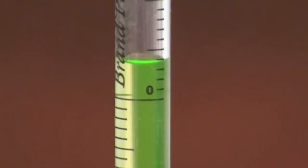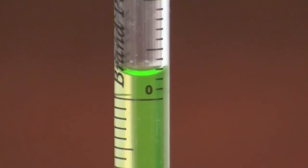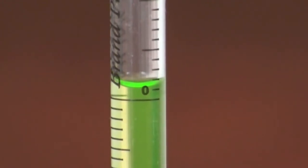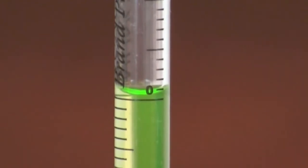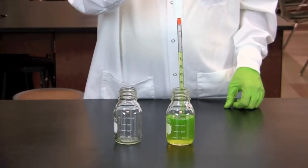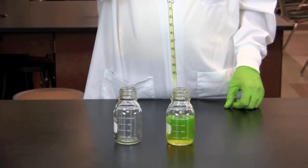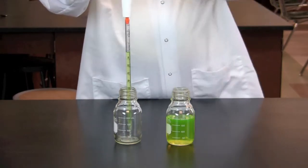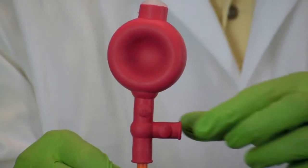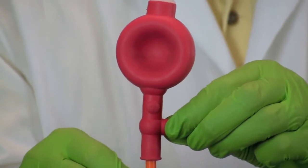Then gently squeeze on the E or exhaust valve until the bottom of the meniscus touches the desired graduated line. Move to the target container you wish to transfer the sample into. Squeeze the E or exhaust valve to dispense the solution.